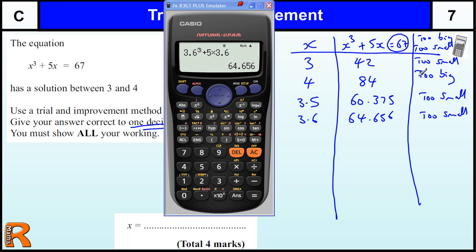So 3.7, hopefully this is going to be big enough. Plus 5 times 3.7 is going to be 69.153, so that's too big.